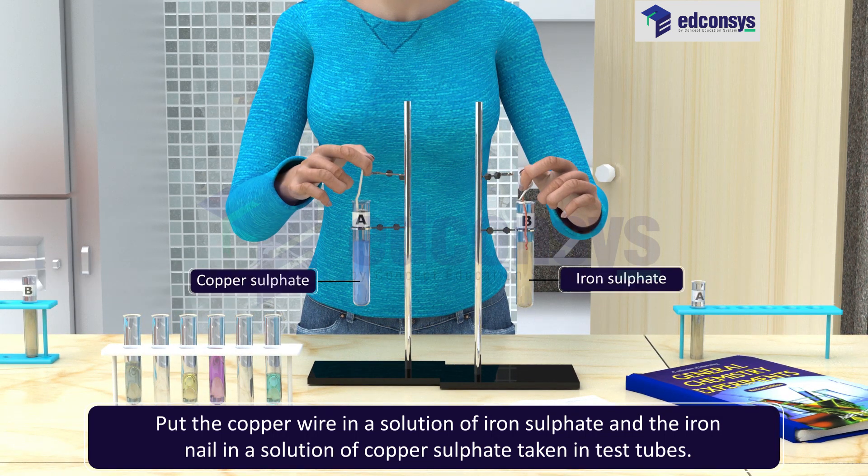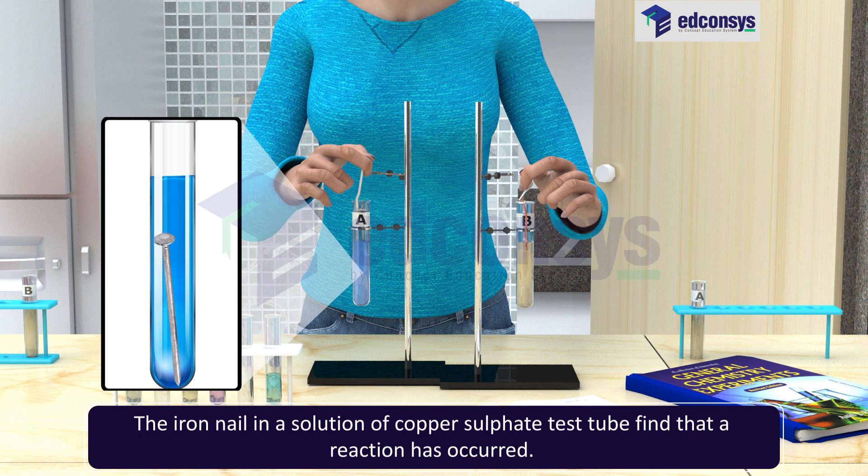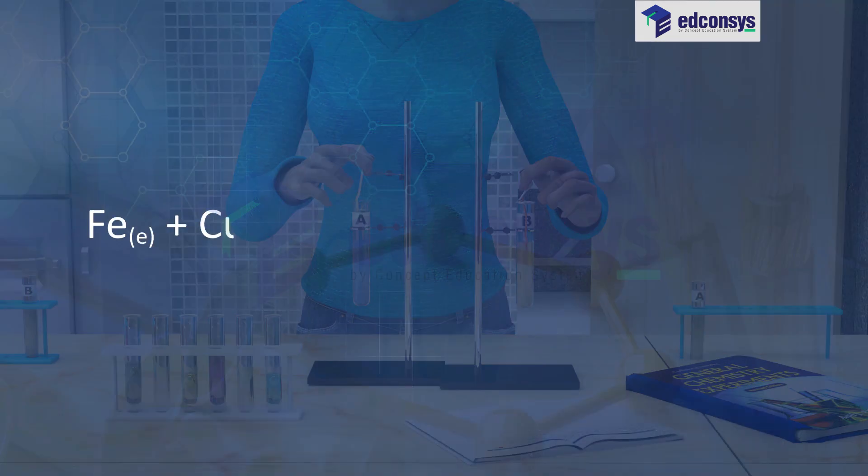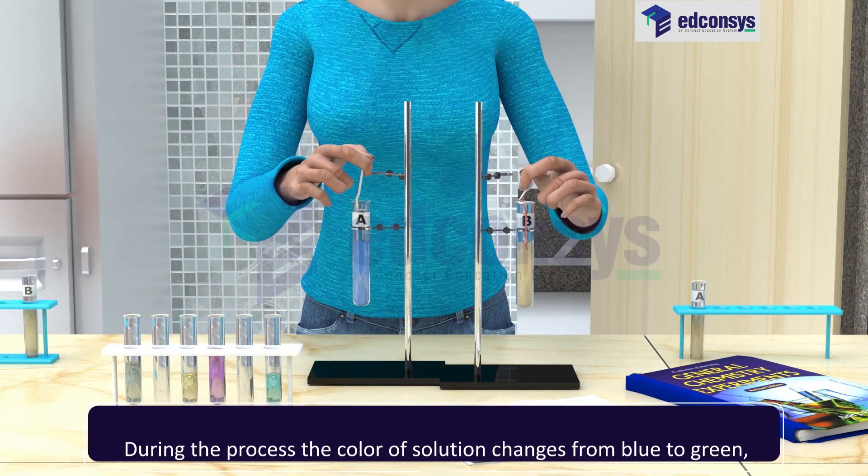Record your observations after 20 minutes. The iron nail in a solution of copper sulfate test tube finds that a reaction has occurred: Fe + CuSO4 gives FeSO4 + Cu. During the process, the color of solution changes from blue to green, which indicates that the process has taken place.